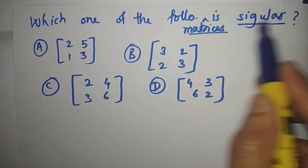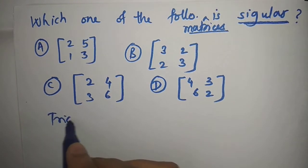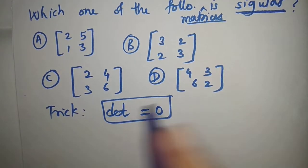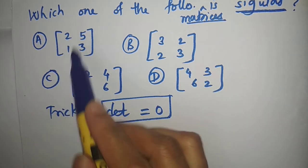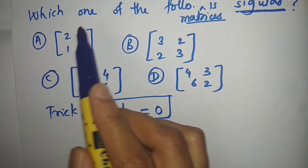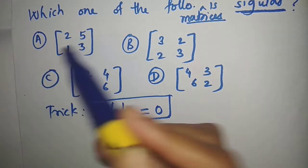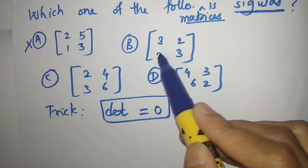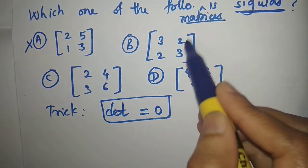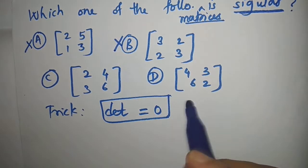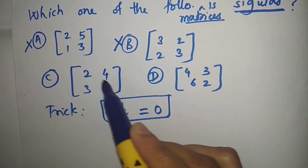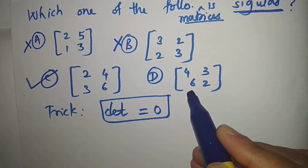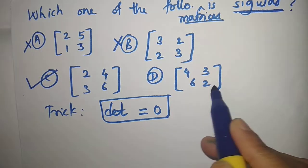The next question asks which matrix is singular, meaning determinant equals zero. For the first option: det = 2×3 - 5 ≠ 0, not singular. For the second: det = 9 - 4 = 5 ≠ 0, not singular. For the third option [[2,4],[3,6]]: det = 12 - 12 = 0, so this is the singular matrix.